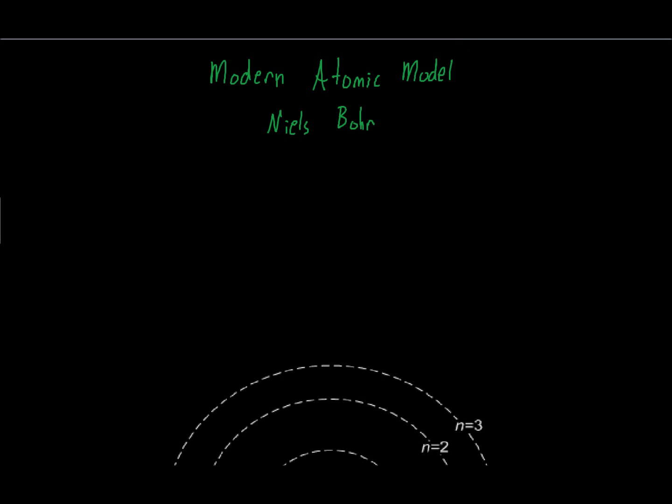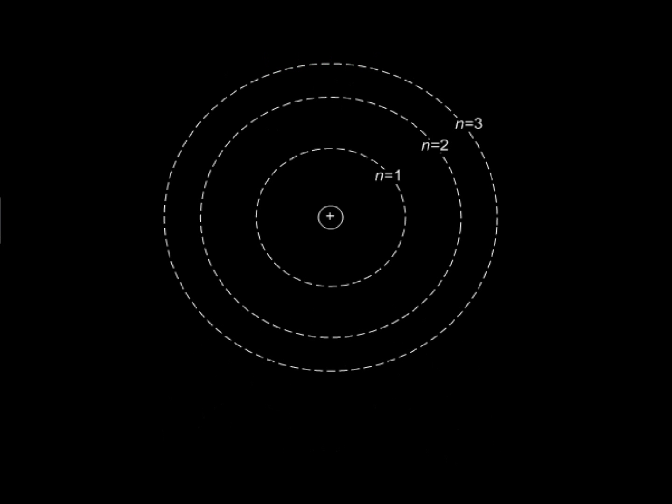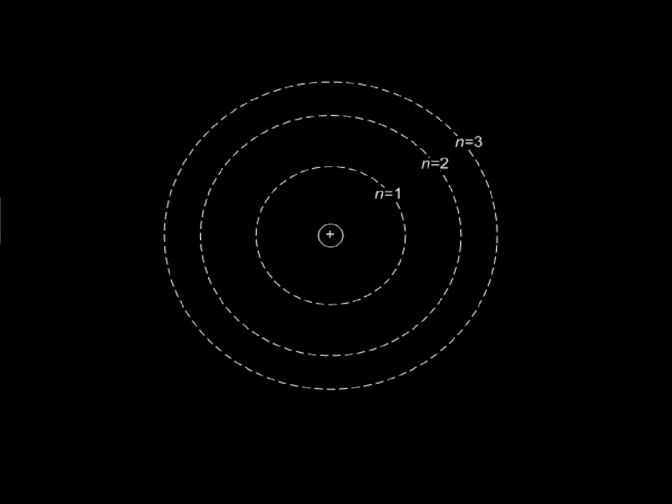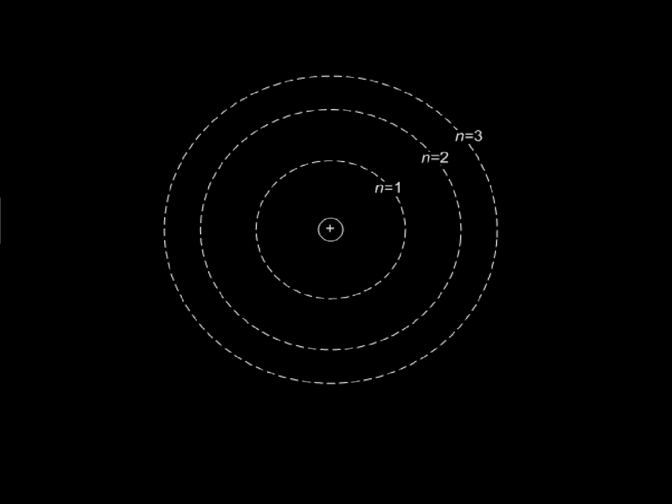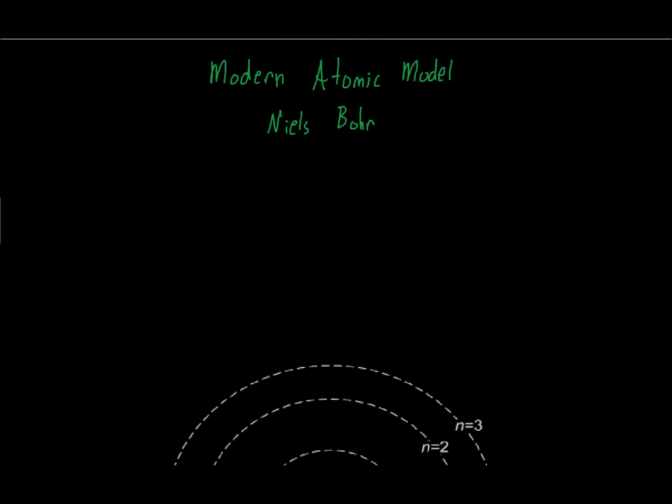He basically said this: he looked at Rutherford's atomic model, which as we all know kind of looked like this right here, which was a solar system like model. And he said, okay, if this is going to work, atoms have to have defined orbital shells. The electrons have to be in these defined orbital shells in order for this to work.